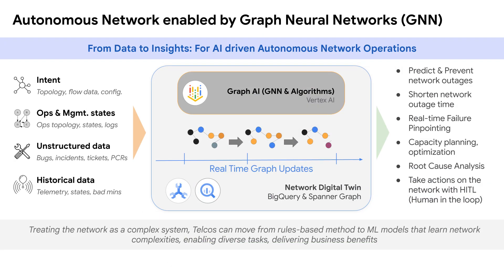To elaborate on GNNs — graph neural networks — these are specialized neural networks that can take graph-structured data into account. They can accept inputs such as intent, ops management and states, unstructured data, and historical data from the network. They then enable use cases such as predicting and preventing network outages, shortening network outage time, real-time failure pinpointing, capacity planning and optimization, root cause analysis, and taking action on the network.